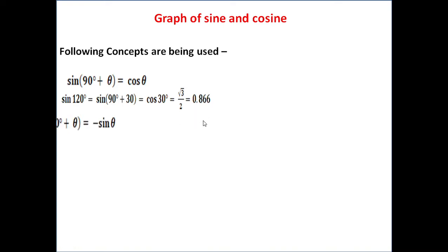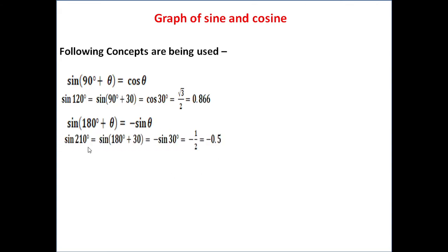Second concept: sine(180 + θ), that means in the third quadrant, that becomes minus sine θ. For example, if you consider sine 210 degrees, then sine(180 + 30) gives minus 1 by 2, that is minus 0.5.